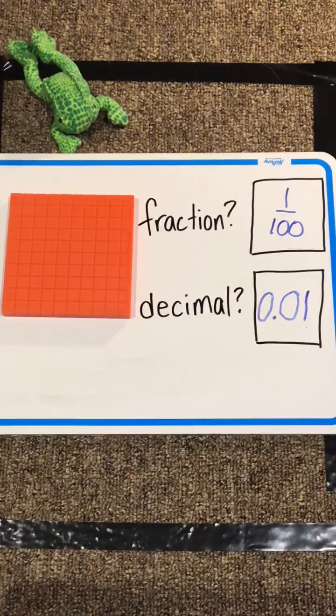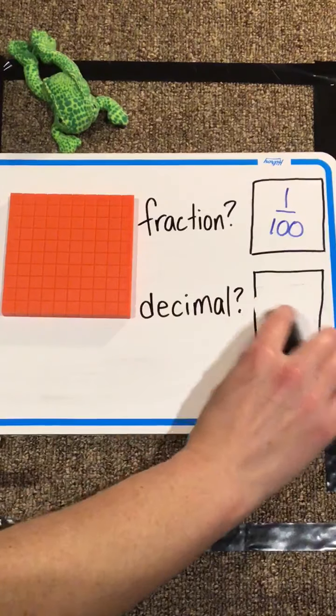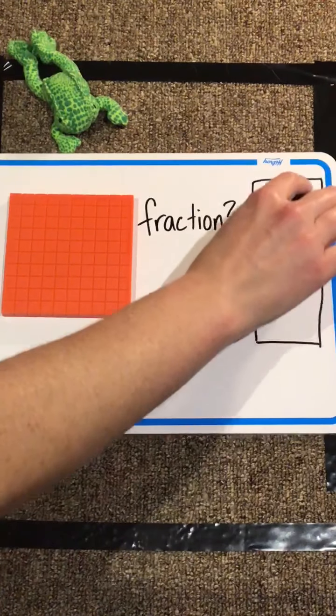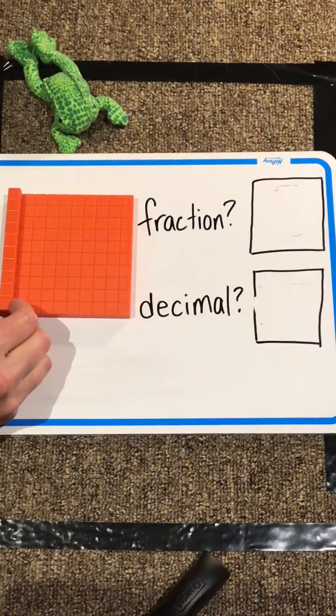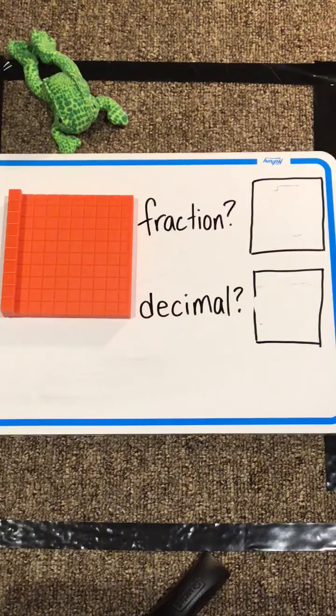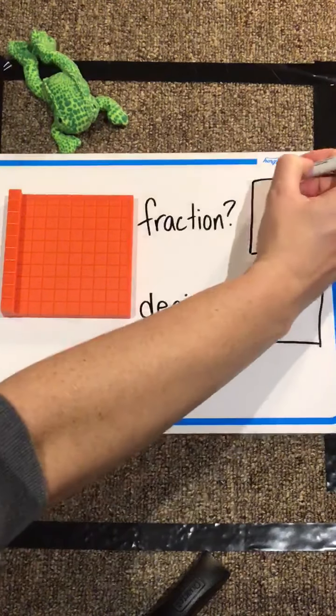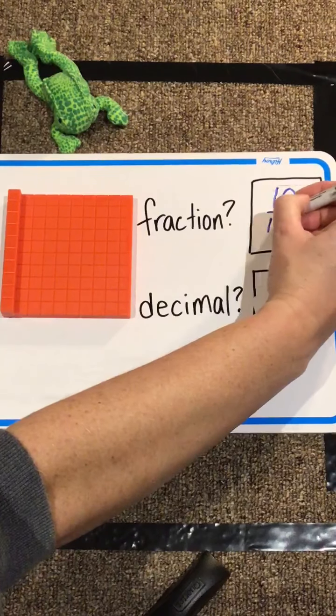Now, what if we erase that, and instead of covering it up with one of the little cubes, we cover it up with a ten stick. So now we're covering up ten pieces of cake in one fell swoop. So our fraction, ten out of a hundred.